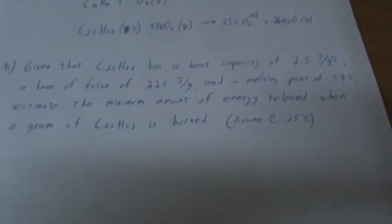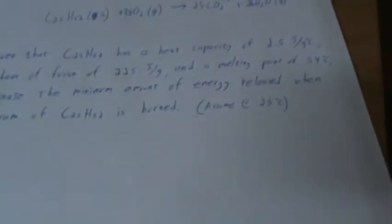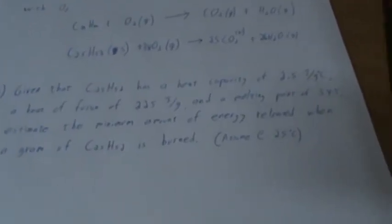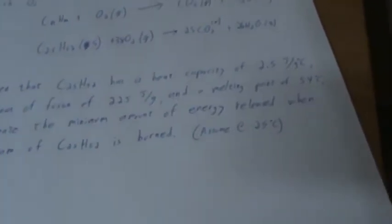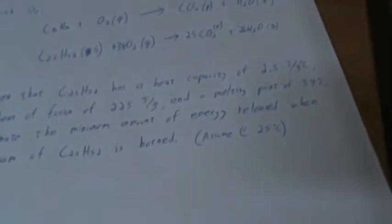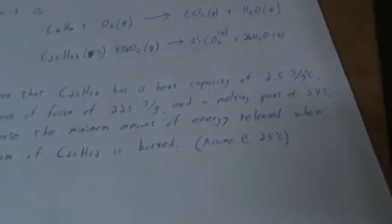Part two. Given that C25H52 has a heat capacity of 2.5 joules per gram Celsius, which is heat capacity and specific heat are synonymous, a heat of fusion of 225 joules per gram and a melting point of 54 degrees Celsius, estimate the minimum amount of energy released when a gram of C25H52 is burned, assuming the candle is at 25 degrees Celsius or room temperature. This question is something I'm sure everyone in Gen Chem has already done, but the way it's asked is a little bit, it combines two or three different topics at once.